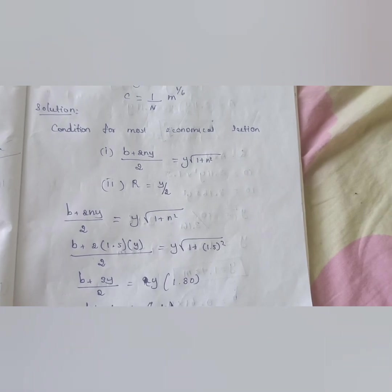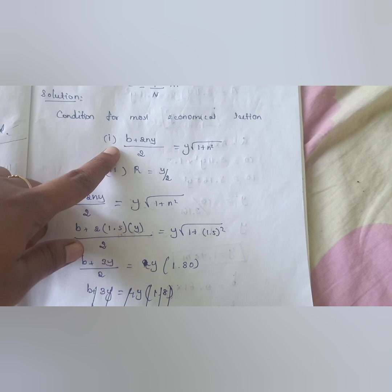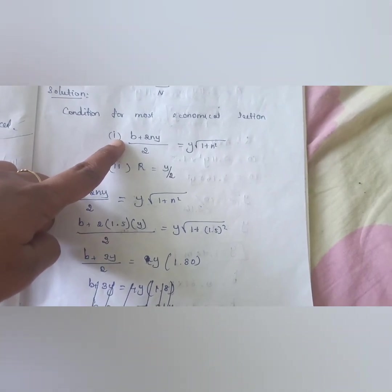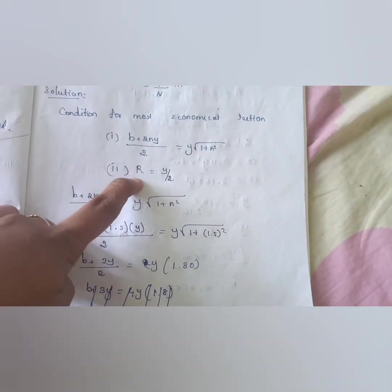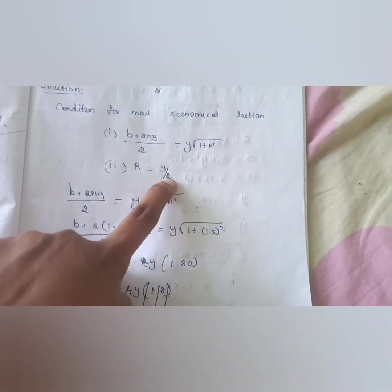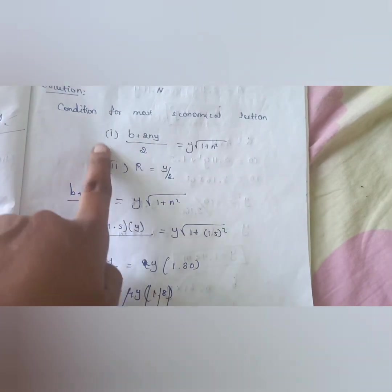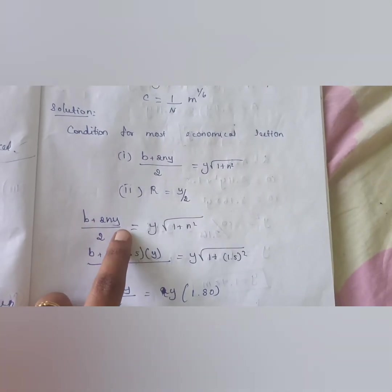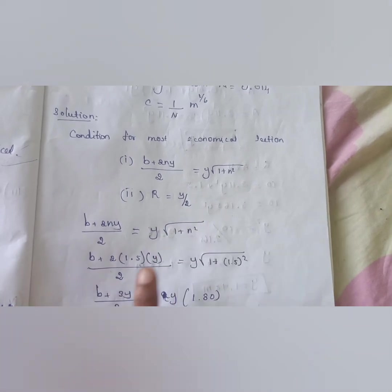There are two conditions for the most economical section. First condition: (b + 2ny) / 2 = y × √(1 + n²). Second condition: hydraulic radius R = y / 2. Using these two conditions, we calculate breadth and depth.